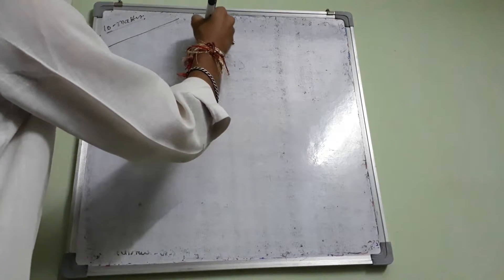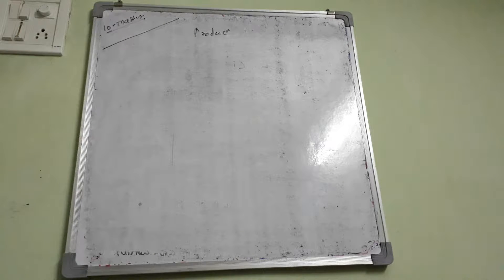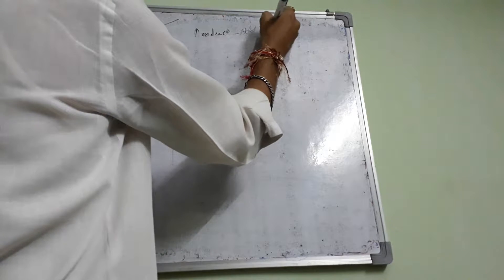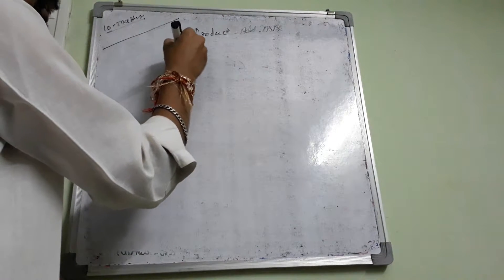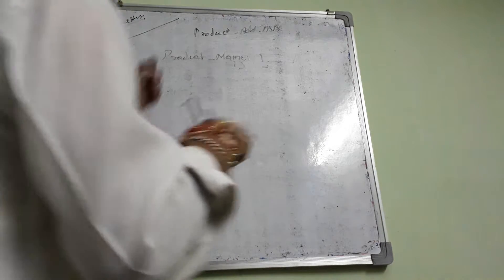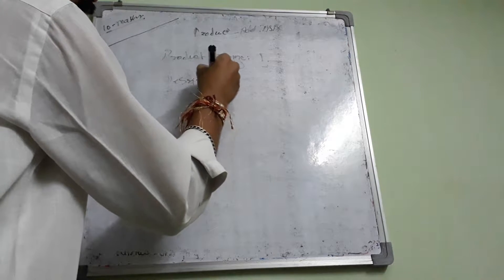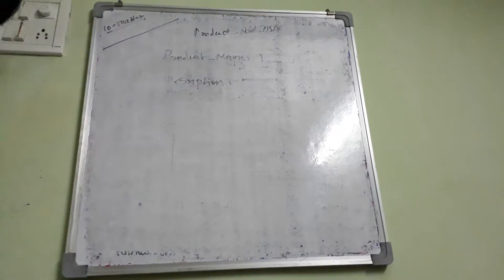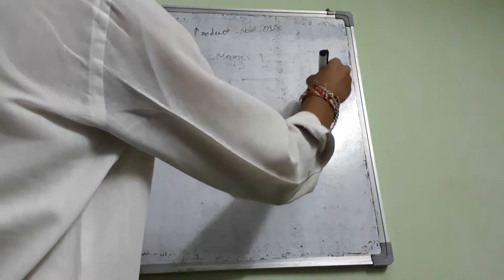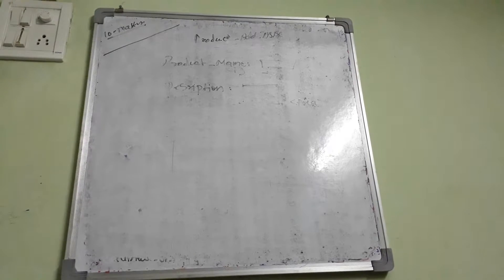So we will discuss product master. I will write the product: add, edit, delete, list. So product_add.aspx. Simple. The product name, text box. Description, text area. Product description as well.